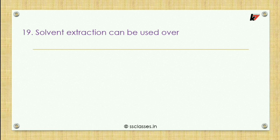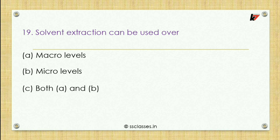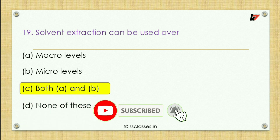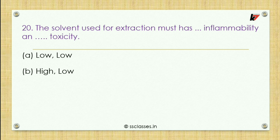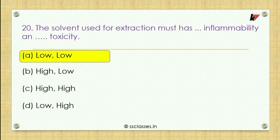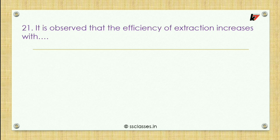Nineteenth question: solvent extraction can be used over macro levels, micro levels, both, or none of these. Since solvent extraction has a wide range, it applies at both micro and macro levels, so option C — both — is correct. Twentieth question: the solvent used for extraction must have what type of inflammability and what type of toxicity? Options: low and low, high and low, high and high, or low and high. The correct answer is option A — both must be low.